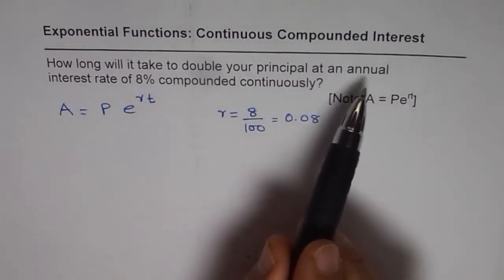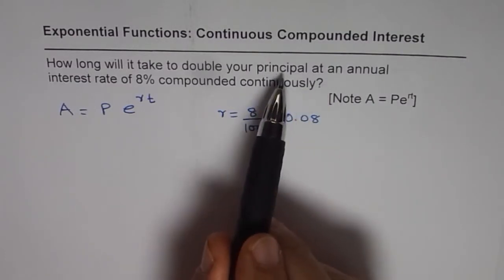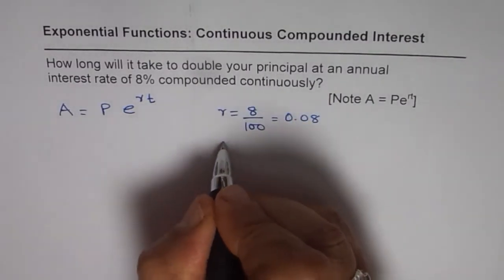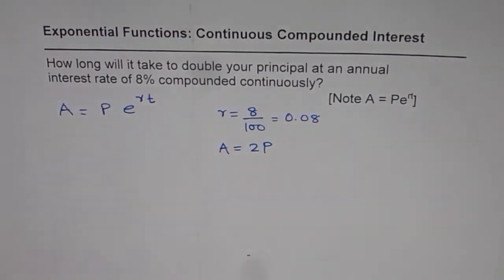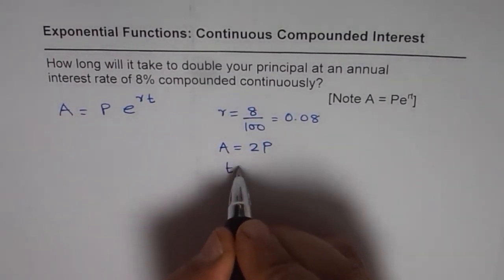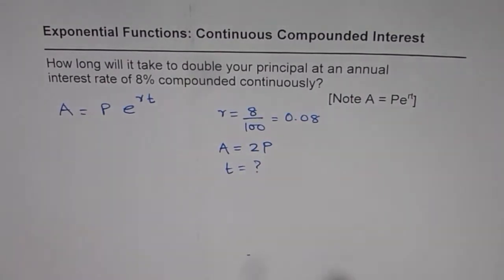We need to find the time when the principal amount doubles. That means the amount A becomes 2 times the principal amount. So that is the question and we need to find t. That is how you should understand the question.